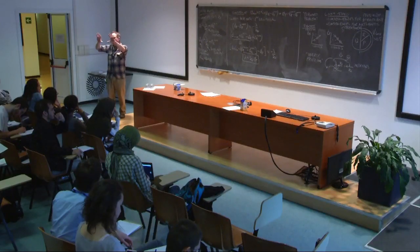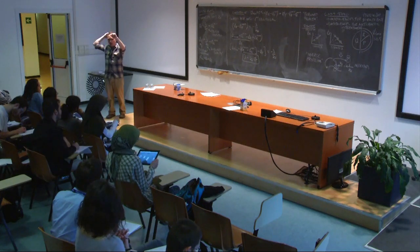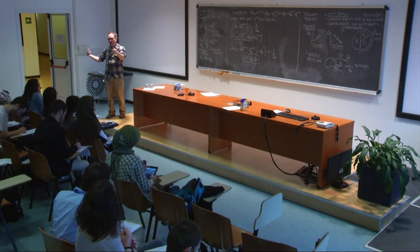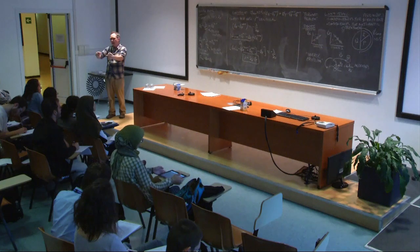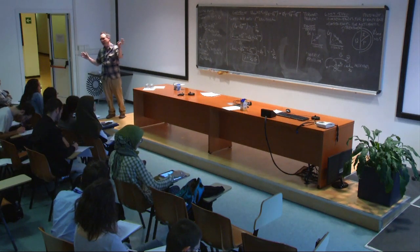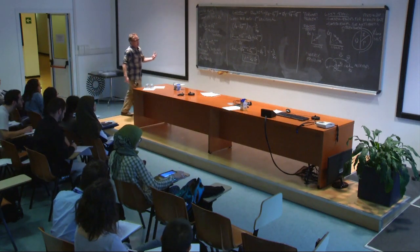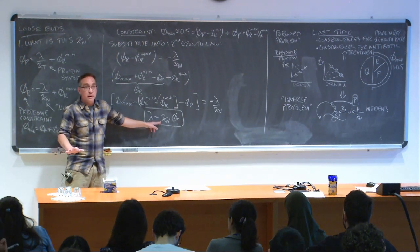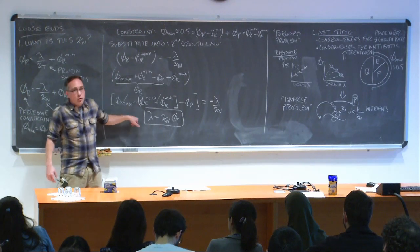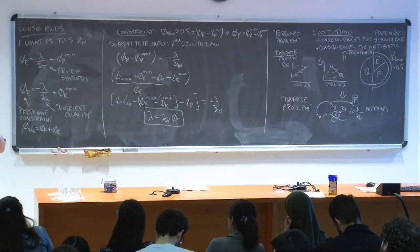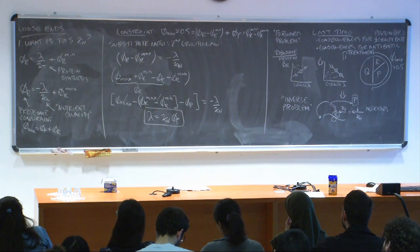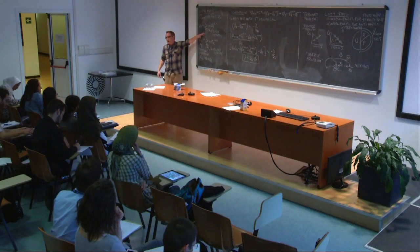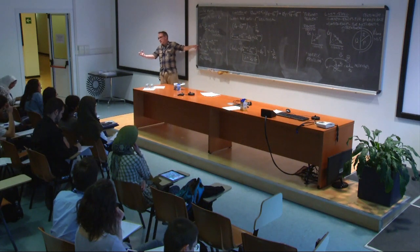On Friday we explicitly wrote out the amino acid supply and demand — or supply and consumption — and made some ad hoc assumptions about the supply rate being related to the external amino acid concentration. We argued that if the transporter was constitutively expressed, you would get something like this. The most important part is that there are two things driving the growth rate, and balanced growth implies that protein synthesis consumption of amino acids is balanced by protein synthesis supply of amino acids.